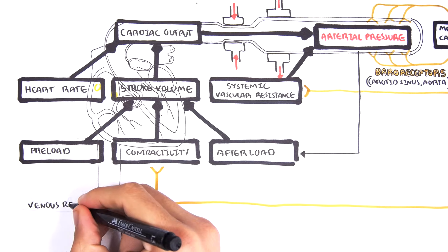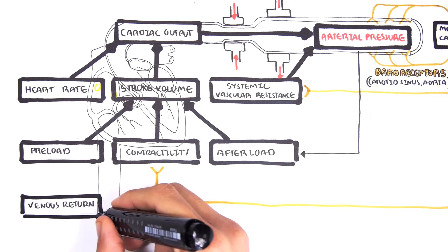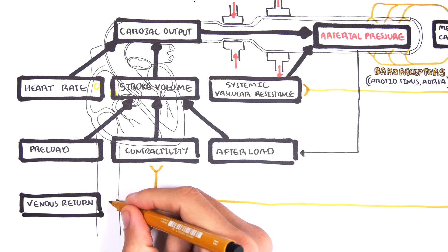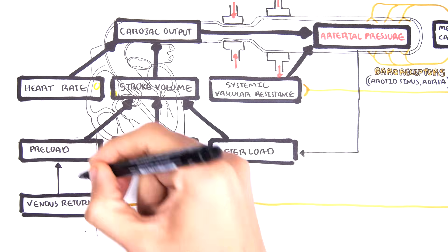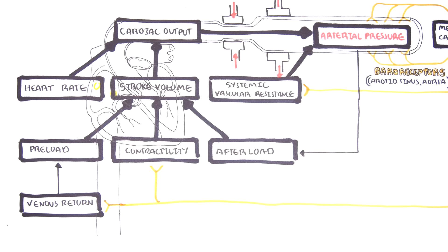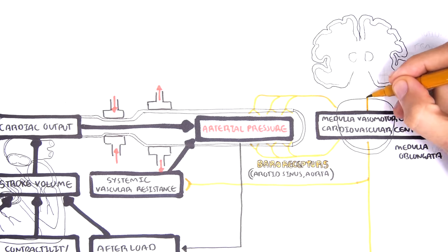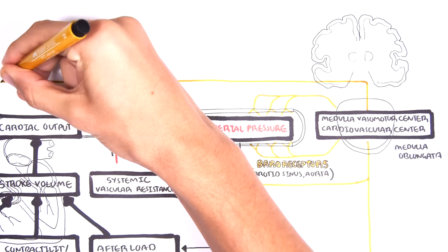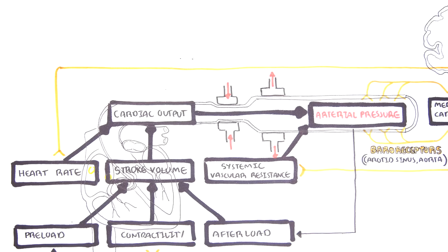The medulla vasomotor center will also influence venous return — how much blood is returning to the heart. As we know, venous return will affect preload. The cardiovascular center in the medulla will have a response that influences your heart rate, either decreasing or increasing it.